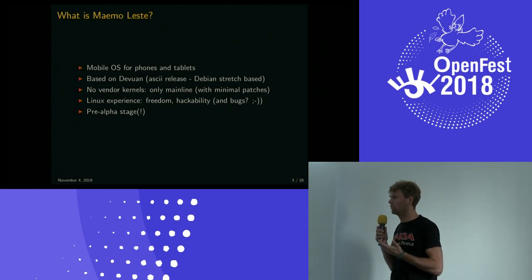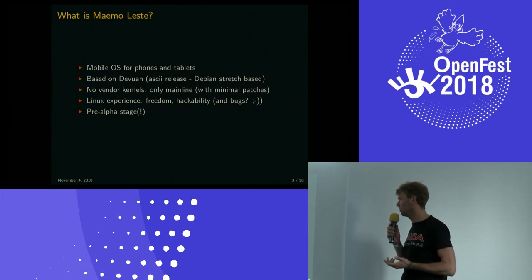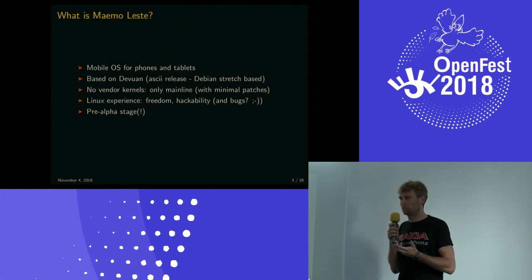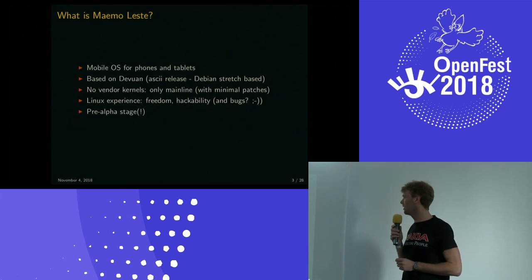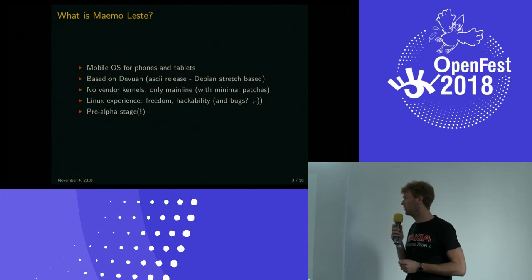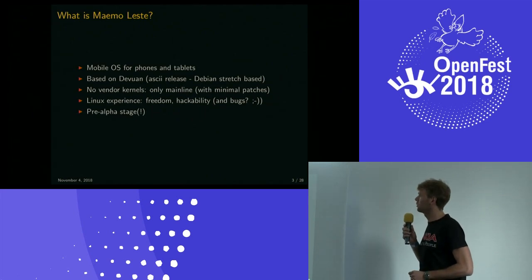In general, we aim to provide a real Linux phone. It's a phone you can call with, but just like the original N900 you can use SSH and you have a normal Debian package manager. Everything that's in Debian, you have it on your phone. Not everything will work easily because certain UIs are just not made for mobile usage. You get the freedom, the hackability, and maybe some bugs as well. We're currently in the pre-alpha stage so there's a lot of stuff that doesn't work yet.